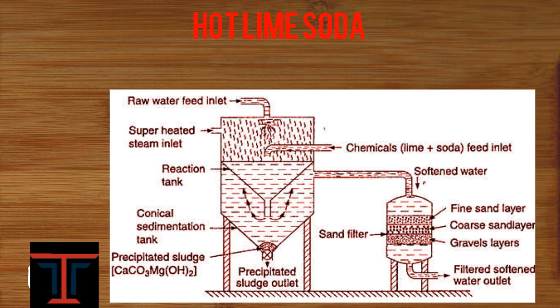The impurities settle down as precipitated sludge or scale, and the pure water passes through the sand filter. The sand filter contains fine sand layer, coarse sand layer, and gravel layer. This is used to remove the impurity.